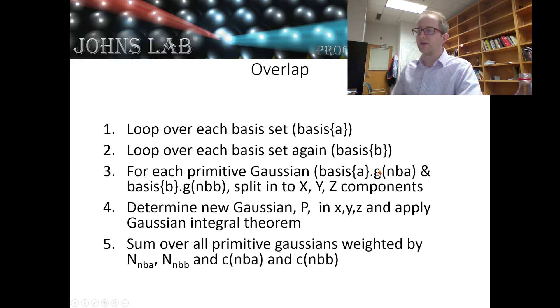Then I loop over each primitive Gaussian inside a, which we'll give the index nba for the number basis a, and then primitive Gaussian nbb inside basis function b. We're going to split that into its x, y, and z components.